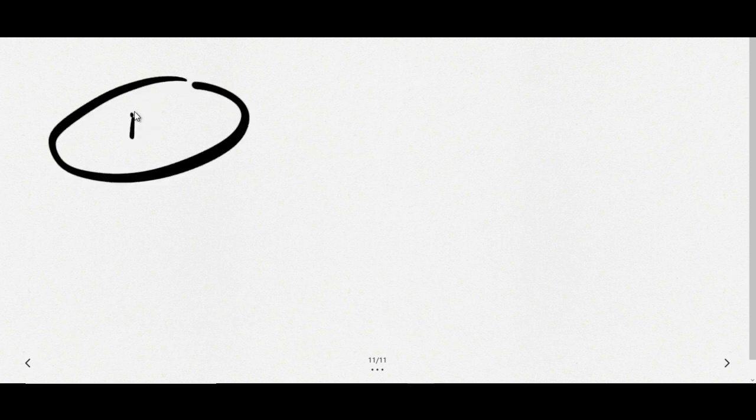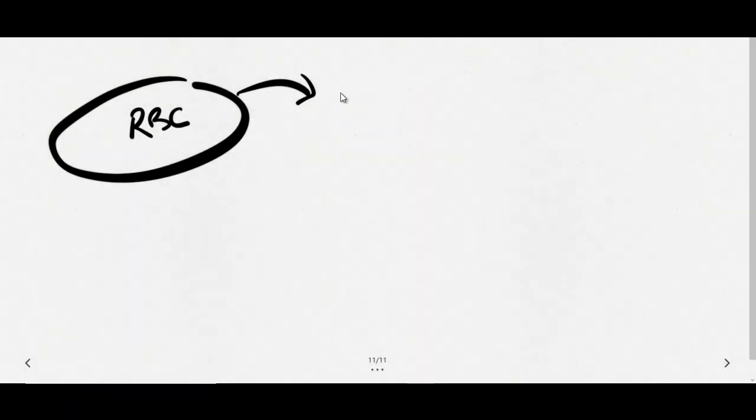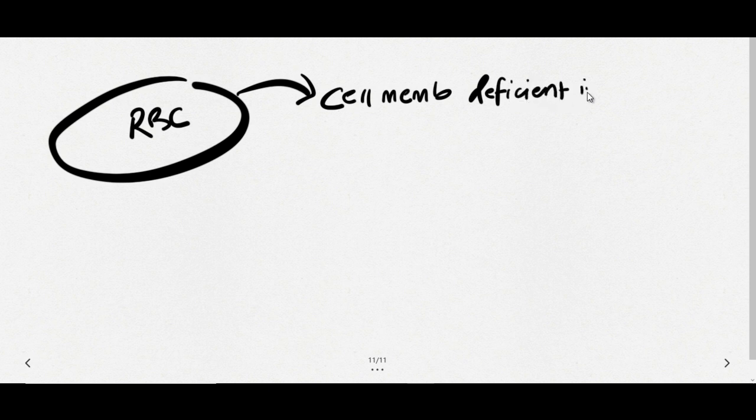Now let us see why these RBCs are getting over sensitive to the complement activity. RBC has a cell membrane and this cell membrane usually has two components or factors or proteins. Those two proteins will actually protect it from the complement action. So if cell membrane is deficient in these factors, and these two factors are DAF, decay accelerating factor, and MIRL also known as CD59, they will increase the sensitivity to complement.